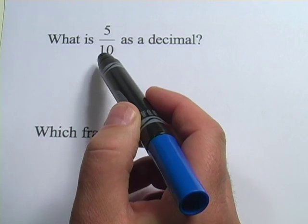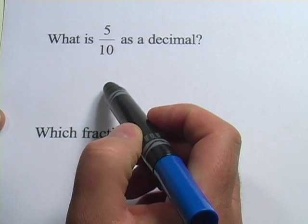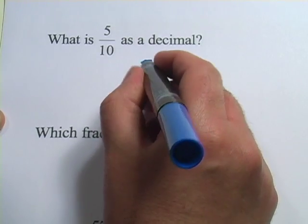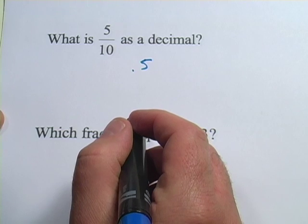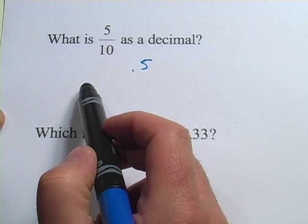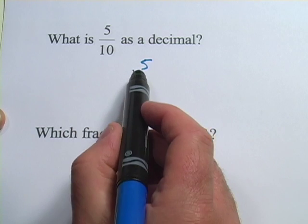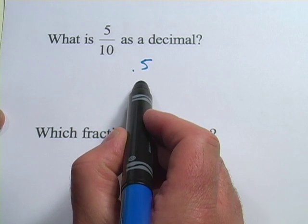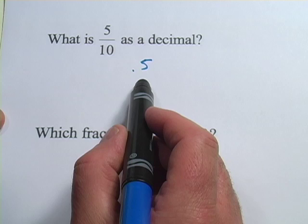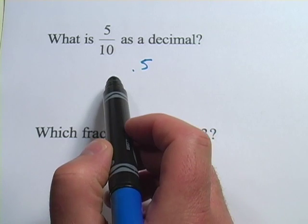What's 5 divided by 10? You might need to do that on your calculator, but it's going to come out to 0.5. You might have known this just by looking at it because 5 tenths means you put 5 in the tenths place, which is just to the right of the decimal point. So that's how to write 5 tenths as a decimal.